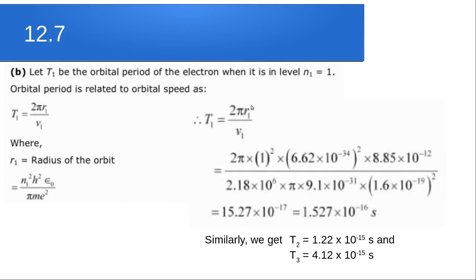Putting all values into the equation for n = 1 and simplifying, we get T₁ = 1.527 × 10⁻¹⁶ seconds. Similarly, calculating for the second and third orbits yields values seen from the formula with n² and n³ scaling.